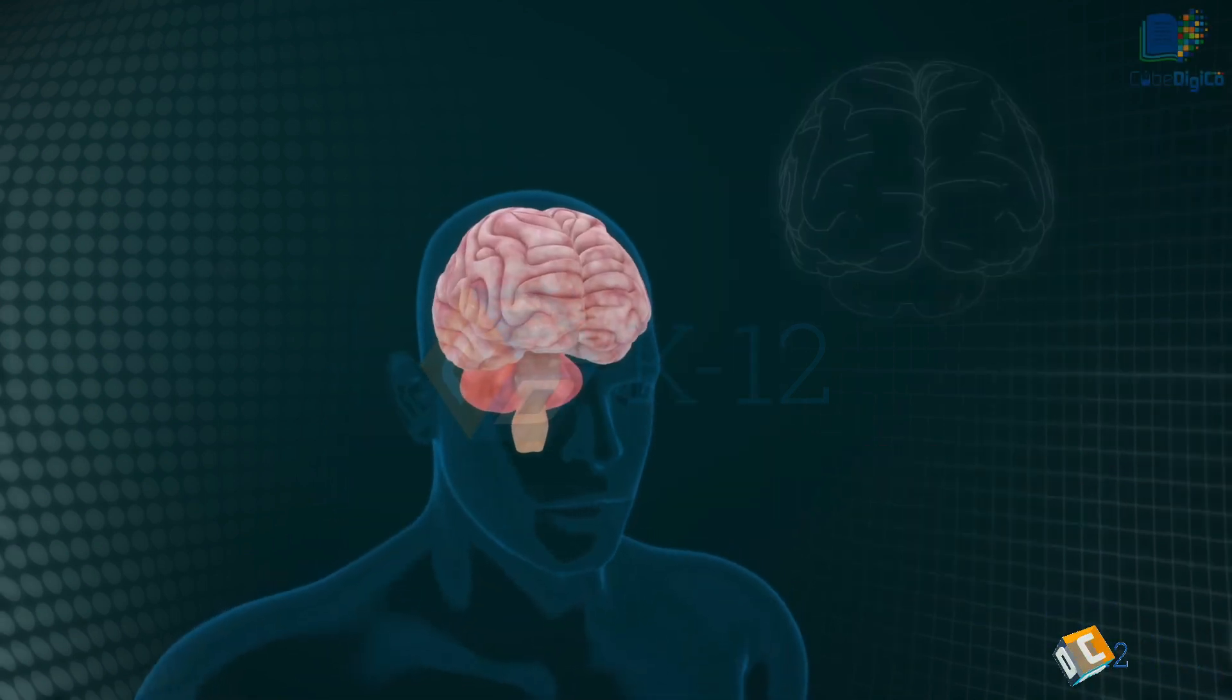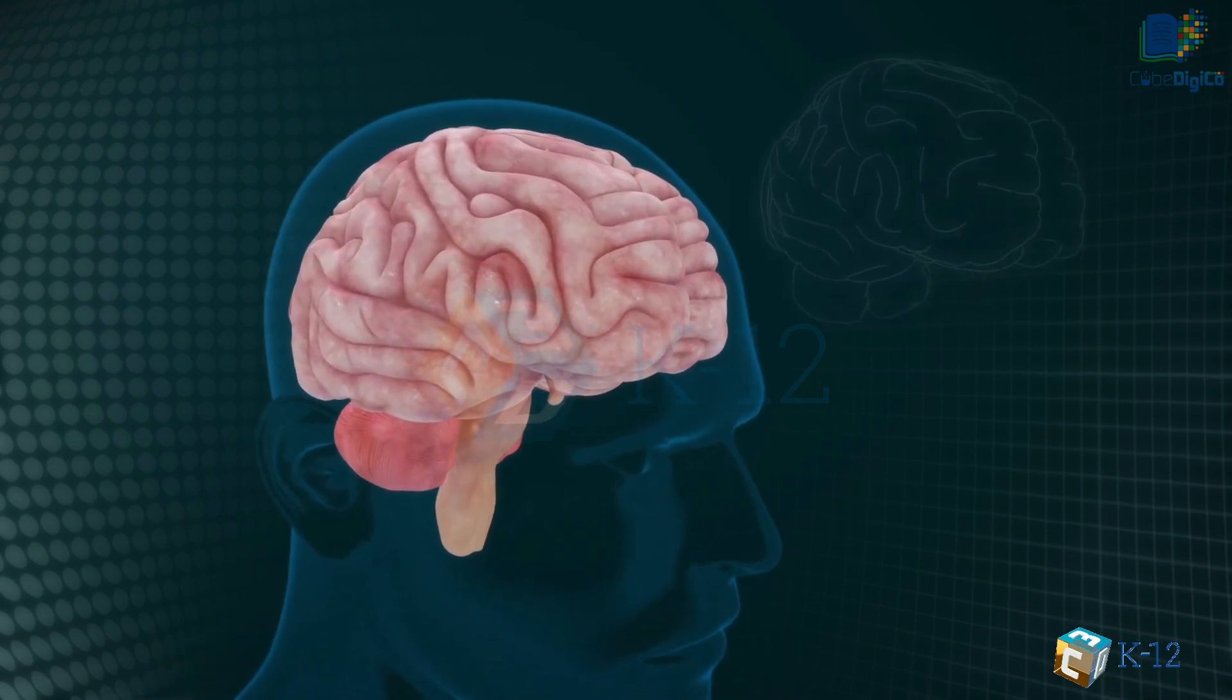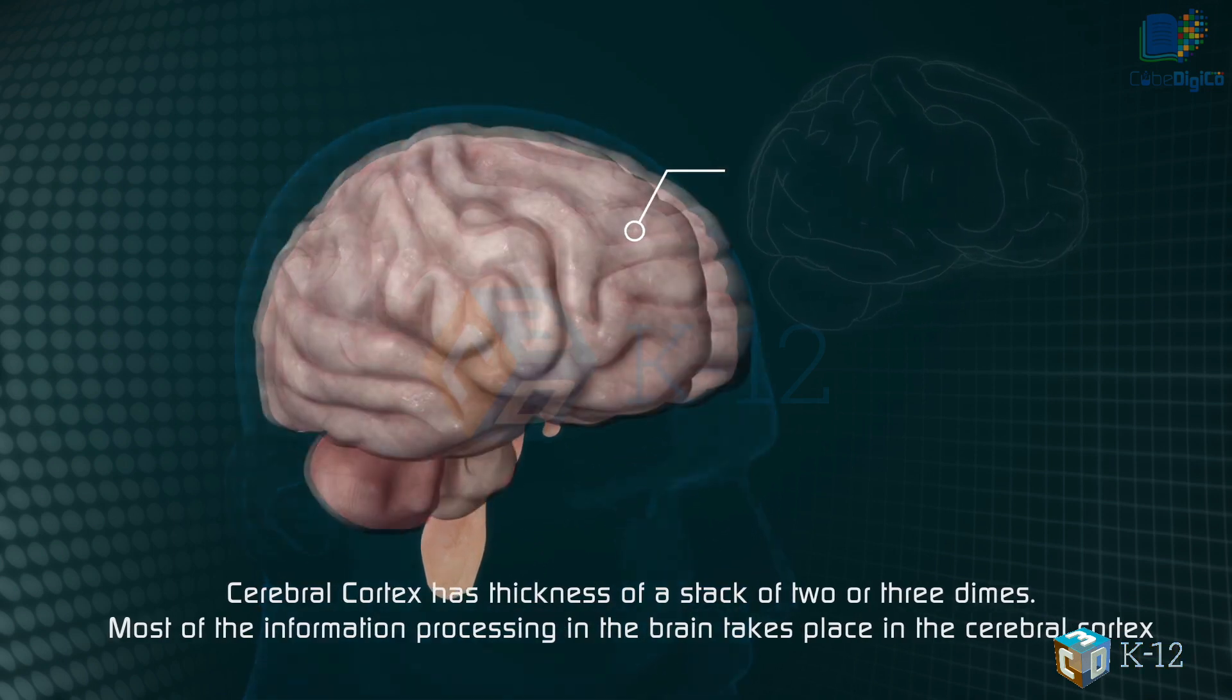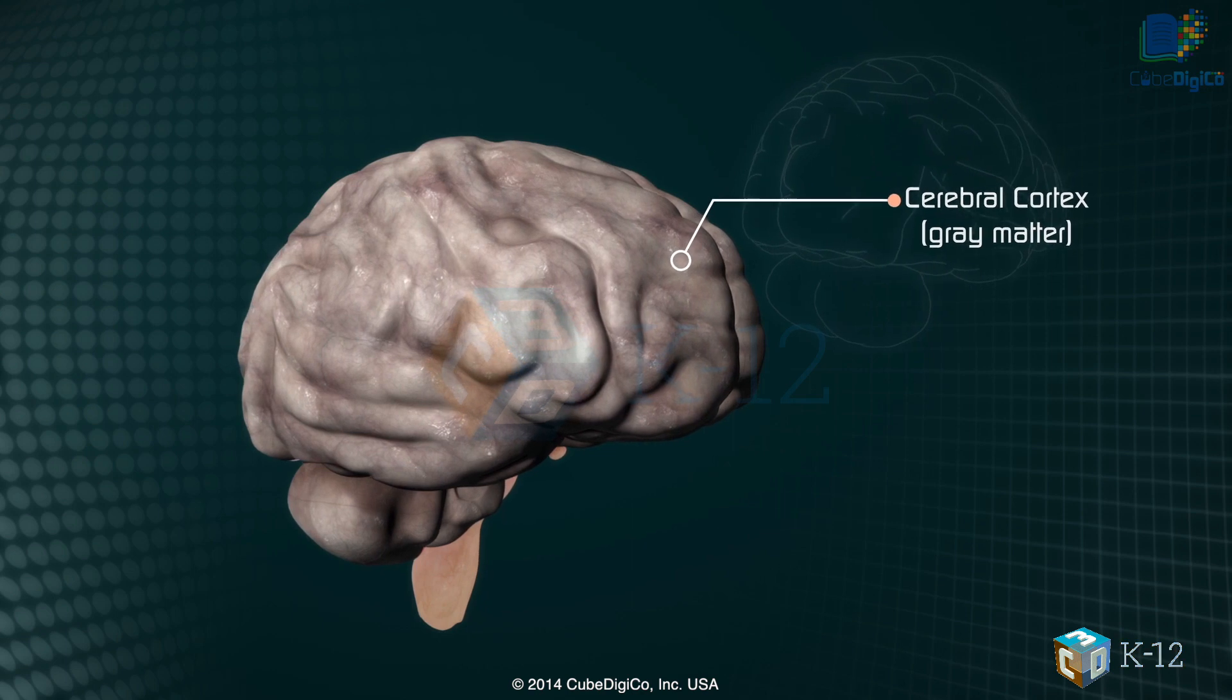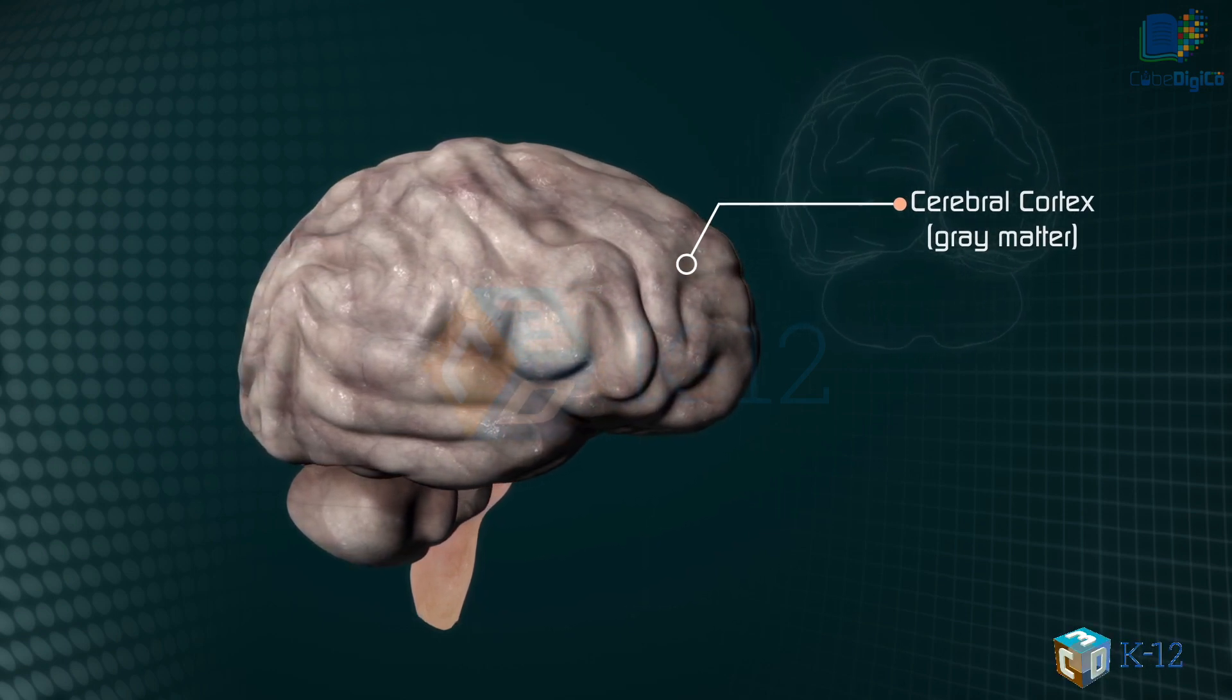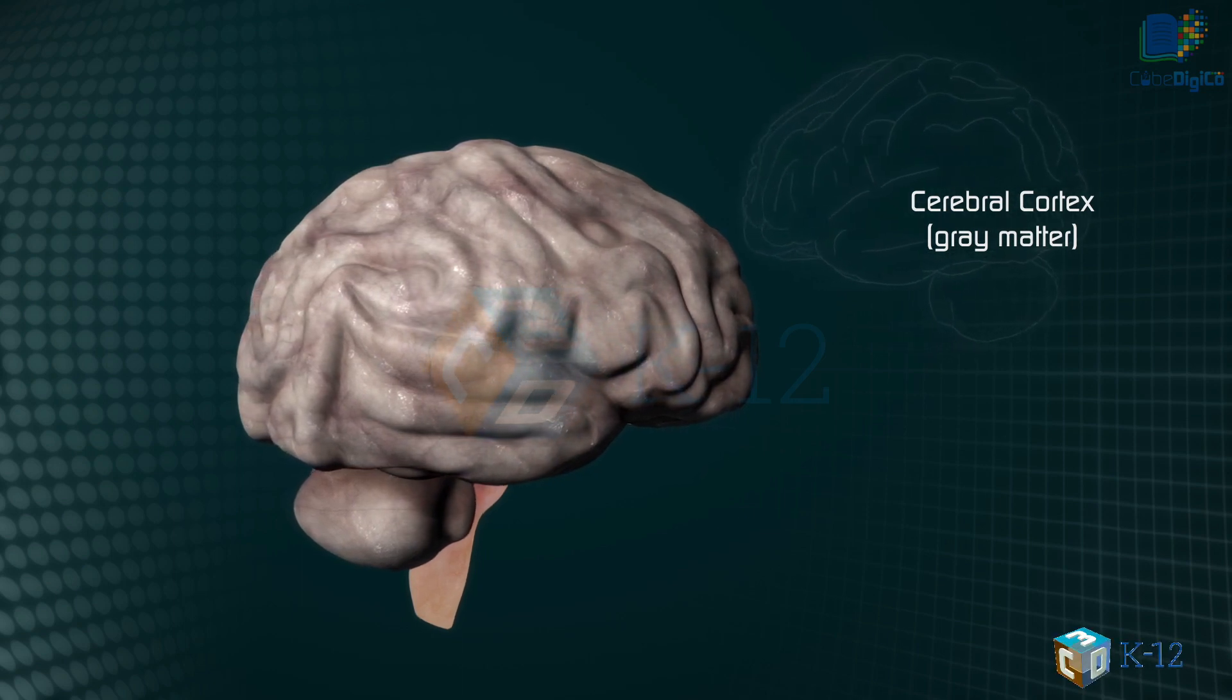The cerebral cortex. Coating the surface of the cerebrum and the cerebellum is a vital layer of tissue the thickness of a stack of two or three dimes. It is called the cortex. Most of the information processing in the brain takes place in the cerebral cortex. When people talk about gray matter in the brain, they are talking about this.